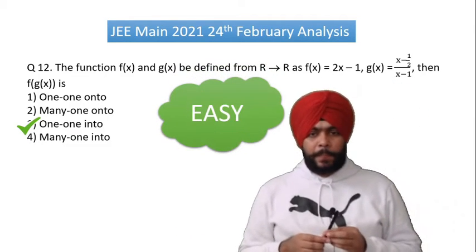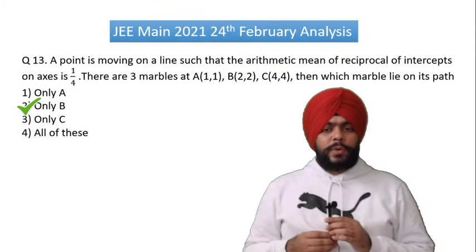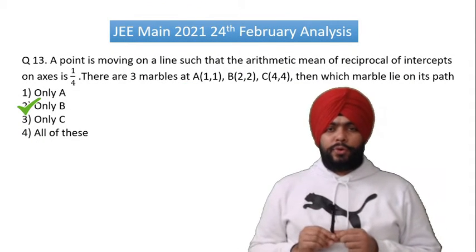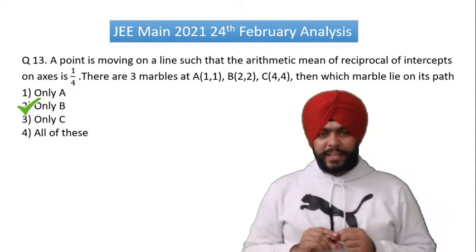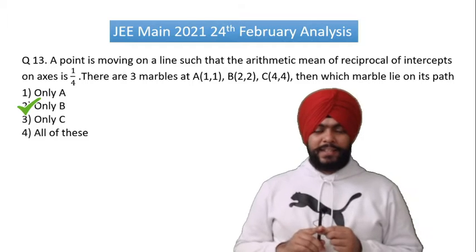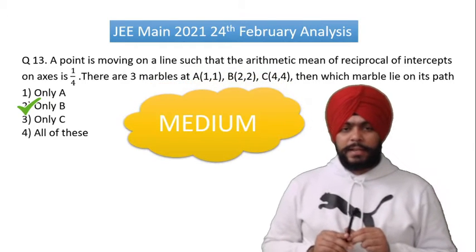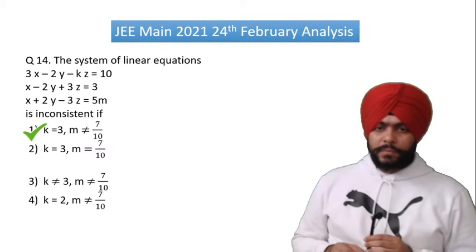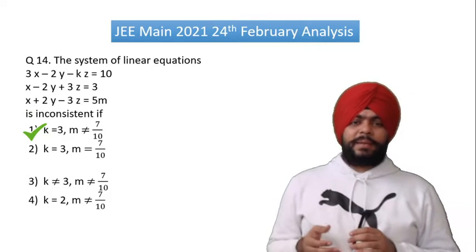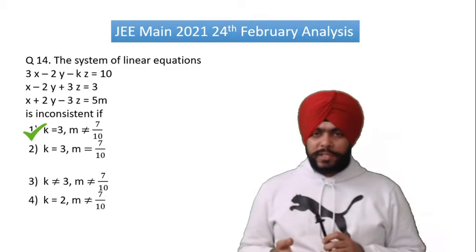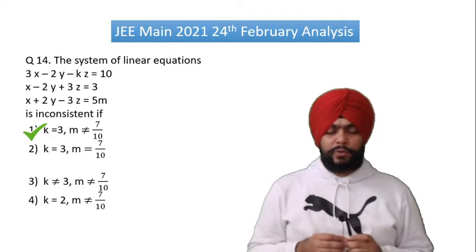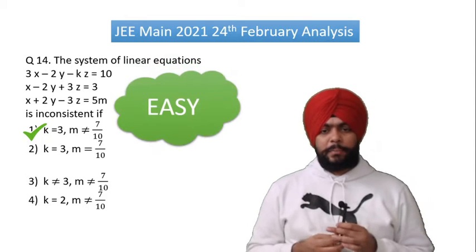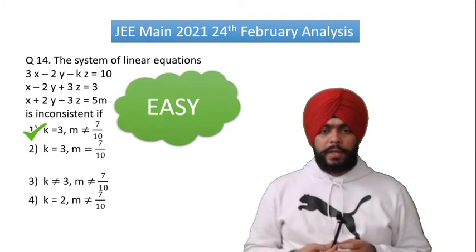Question number 13 involves 3 points — for those who are prepared it is manageable, otherwise it is a medium level question. Question number 14: in NCRT there are many questions of this type and all cases are discussed, so it is definitely an easy question. It is based on system of linear equations.